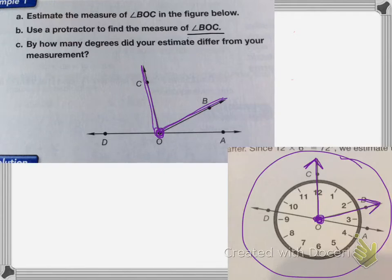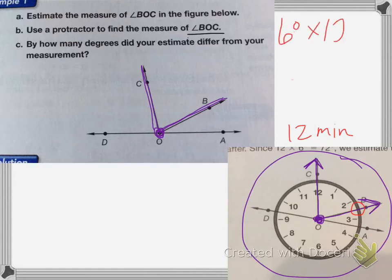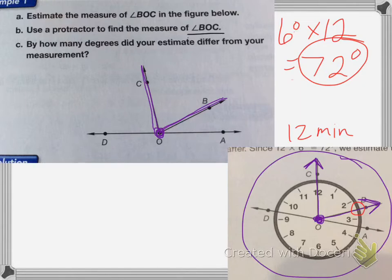If we look at where B falls on the clock, it looks like it's at about the 12-minute mark. So we take 6 degrees times 12 minutes and end up with 72 degrees as our estimation. Then you take your protractor and measure it — we get 75 degrees, so we were only off by 3 degrees.